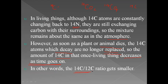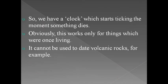In other words, the C-14 to C-12 ratio gets smaller after death. The C-14 to C-12 ratio is a constant for living beings, but after death, C-14 undergoes radioactive decay while C-12, being a stable isotope, does not change. So after death, the C-14 to C-12 ratio gets smaller due to radioactive decay of C-14. We have a clock which starts ticking the moment something dies — this clock works only for things that were once living.